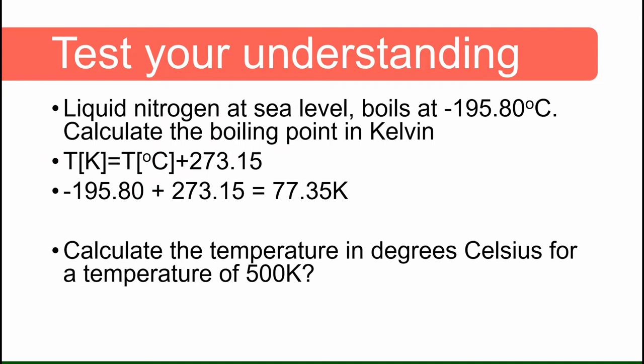For the first question we take minus 195.8 degrees Celsius and we add 273.15 to it and we get 77.35 Kelvin. For the second question we take 500 Kelvin and subtract 273 from it and get 227 degrees Celsius.